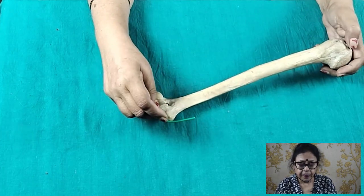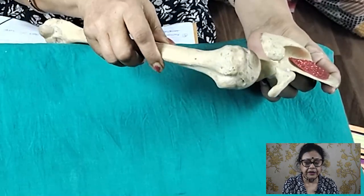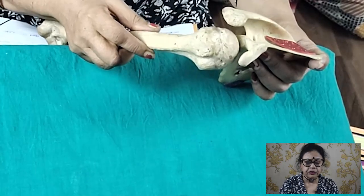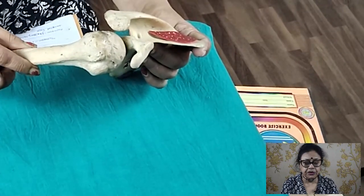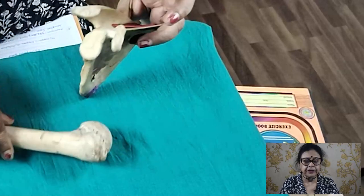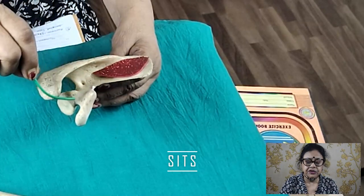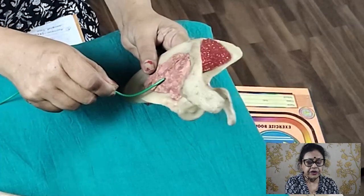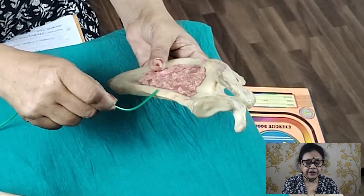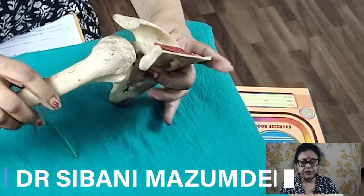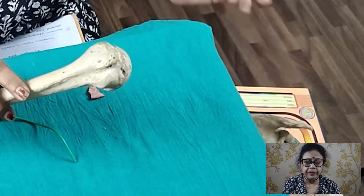The glenoid of the scapula and the head of the humerus together form the shoulder joint, which is very important. The shoulder joint is protected by the SITS muscles: S stands for supraspinatus, I stands for infraspinatus, T stands for teres minor, and S stands for subscapularis, which covers the whole ventral surface. All these muscles protect the shoulder joint — remember them by the mnemonic SITS.